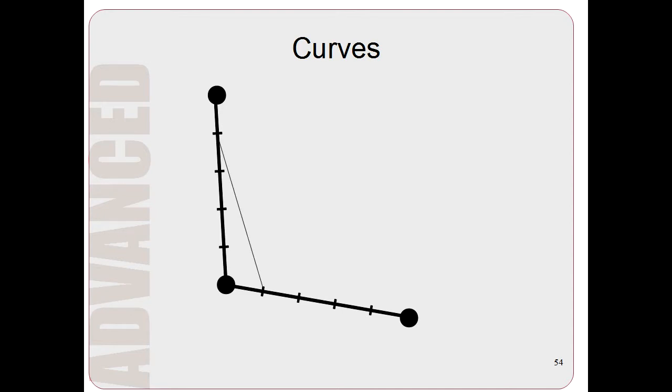Then it draws a line between the first parts of each of these two lines. Then it draws a line between the second parts of each of these two lines. Then it draws a line between the third parts of each of the two lines. And then between the fourth parts of each of the two lines.